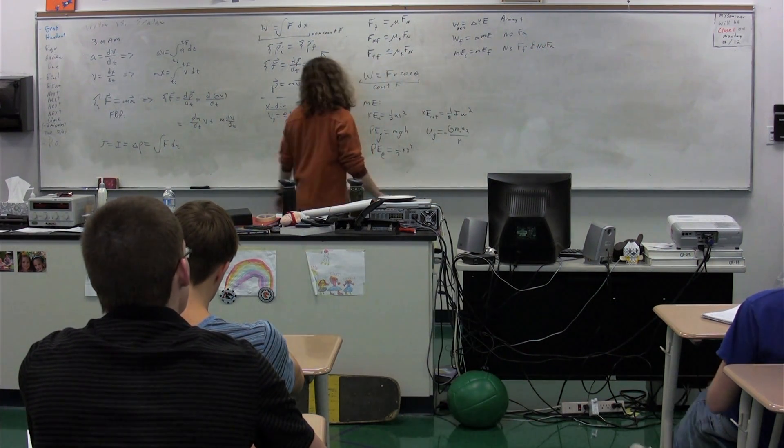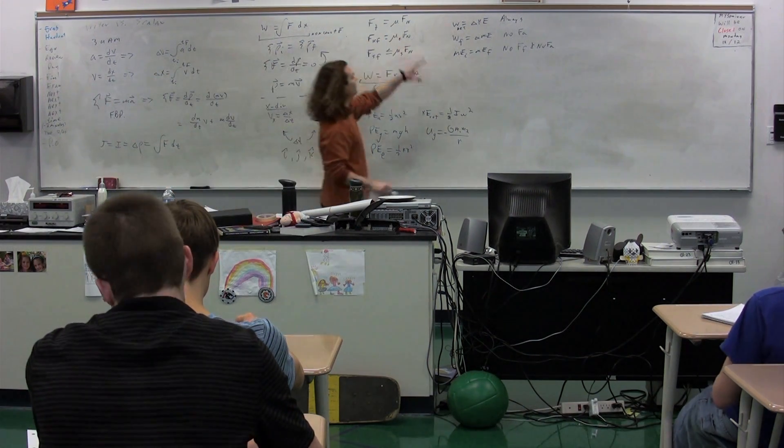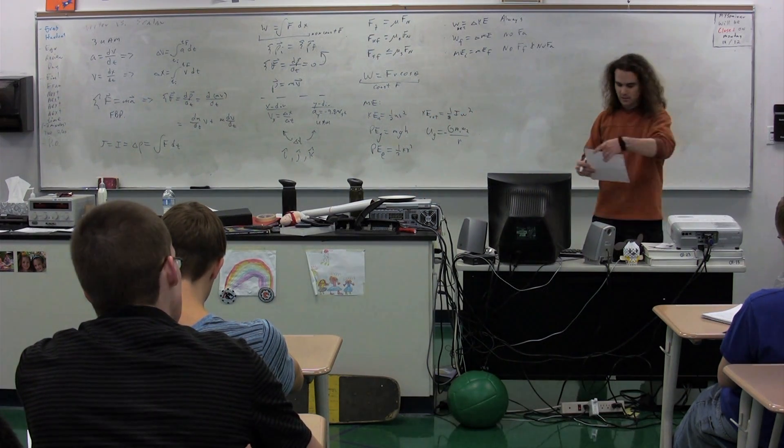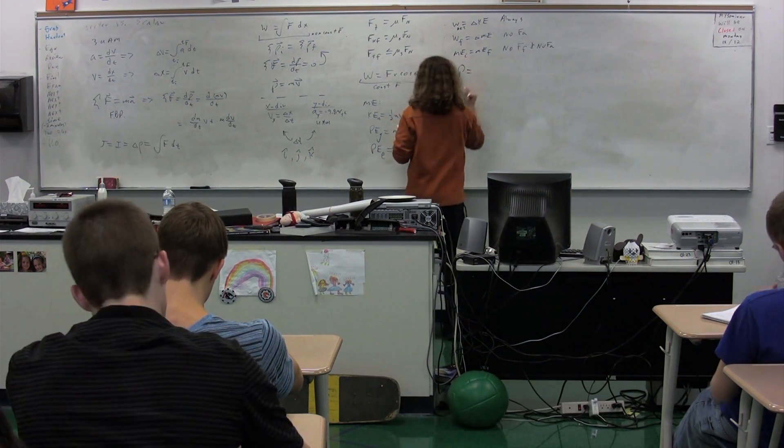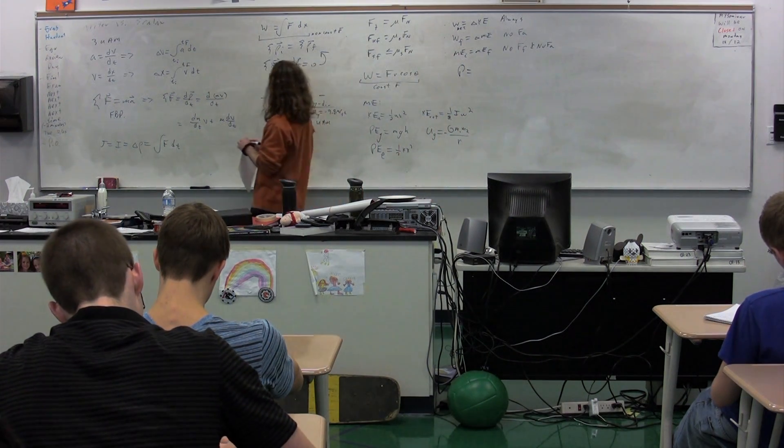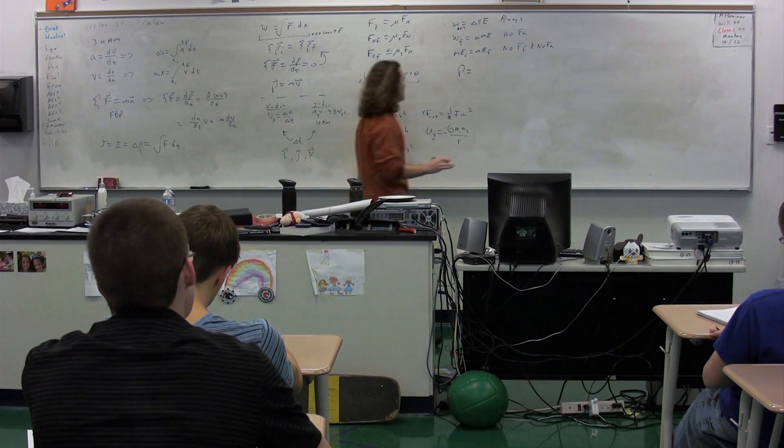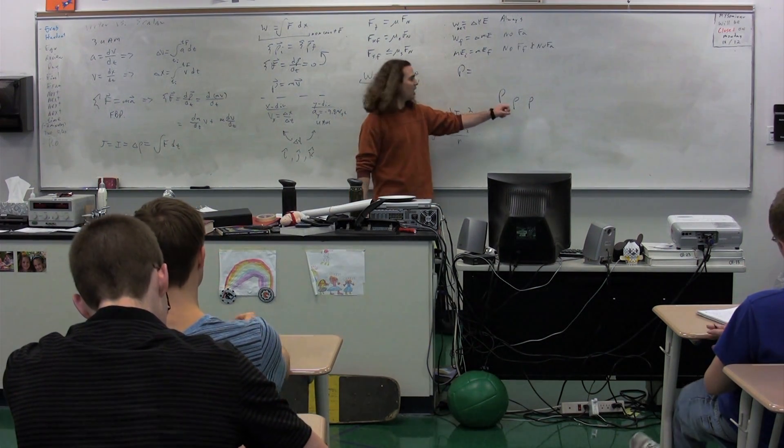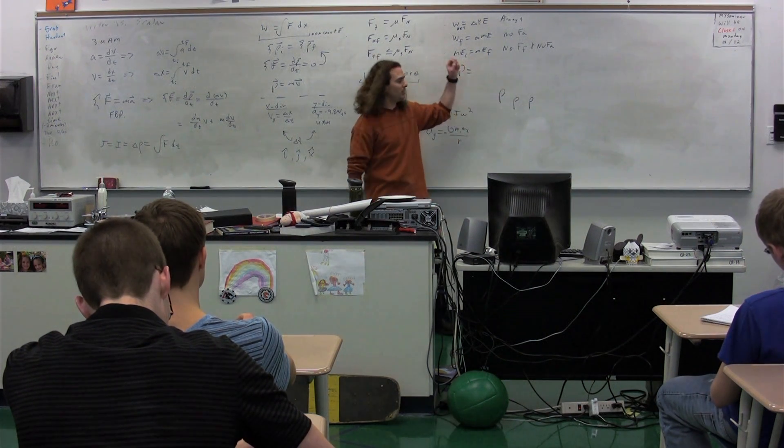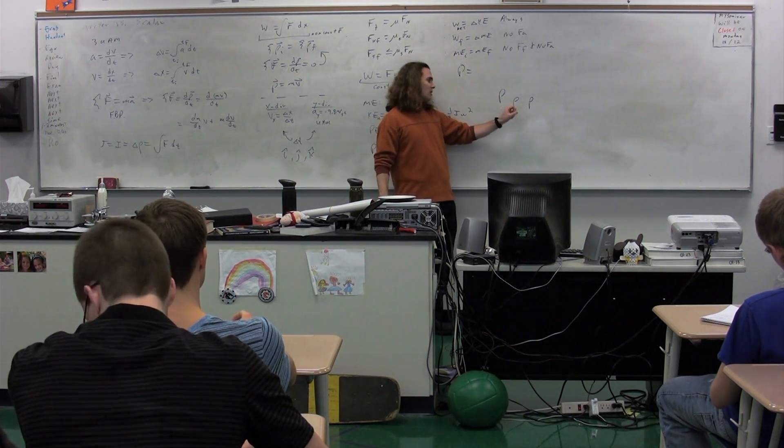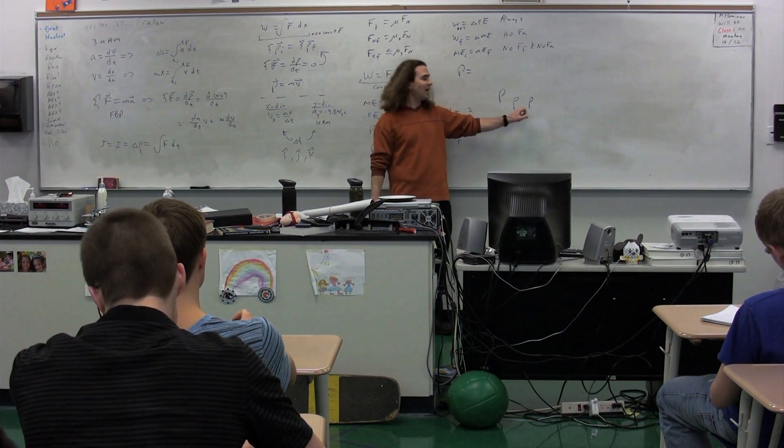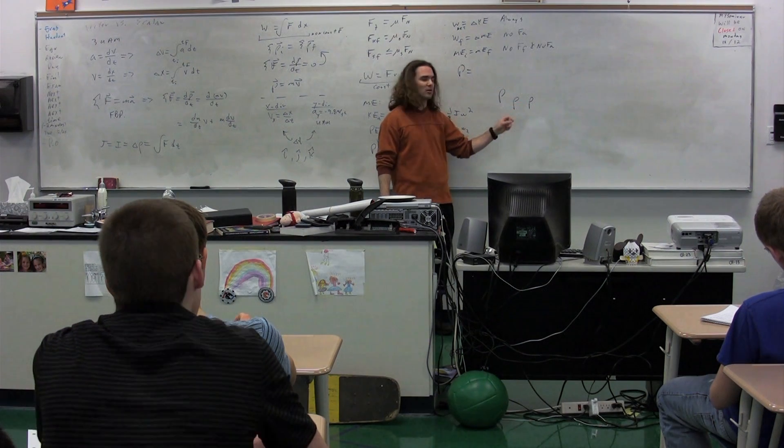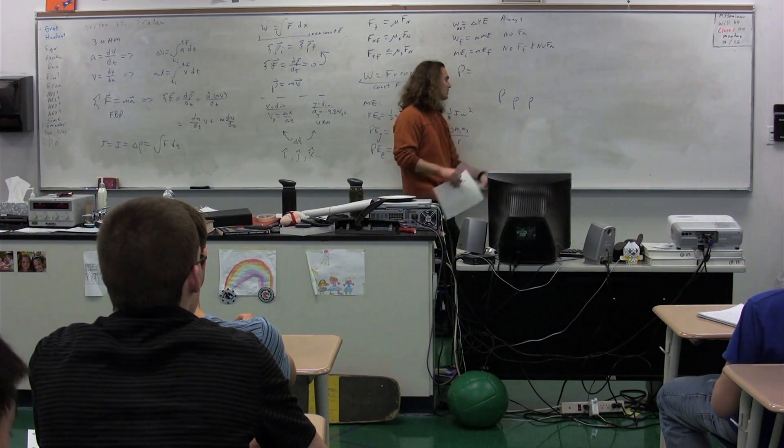So please realize that none of these three are on your equation sheet. Power. Not to be confused. Let's do this real quick. We have three P's. We have this one, this one, and this one. We have a capital P, a rho, and a lowercase p. Capital P stands for? Power. Rho stands for? Density. And lowercase p? Momentum. So be careful. I know when I write them on the board it's hard to tell the difference. Uppercase, rho, and lowercase p.